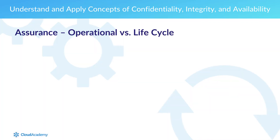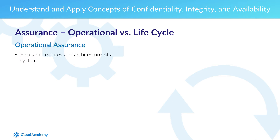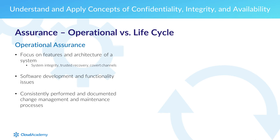Throughout our organization's and system's life cycles, we need assurance that these characteristics are being met appropriately. We have operational assurance, which focuses on the features and architecture of a system — including things like system integrity, trusted recovery, the identification and remediation of covert channels. It means building in software security from the beginning and consistently implementing policies to get consistent enforcement of processes like change management and maintenance, so the organization's systems can be depended upon to work in a proper, expected fashion.